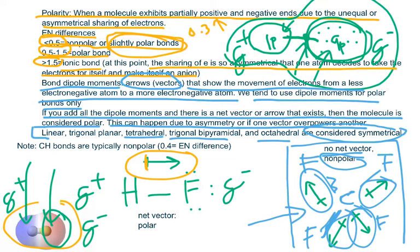One more note: C–H bonds have an electronegativity difference of 0.4, but we typically consider these bonds to be nonpolar since 0.4 is less than 0.5. You could say it's slightly polar or just call it nonpolar. Now let's try a few practice problems to see whether we can determine polarity.